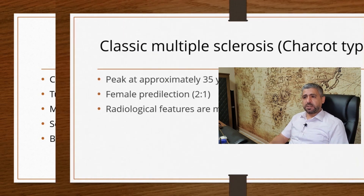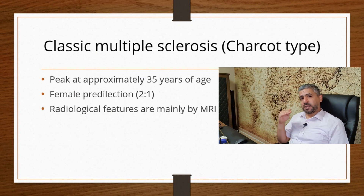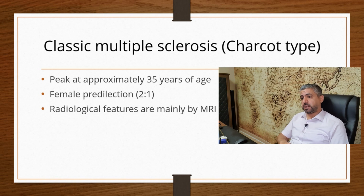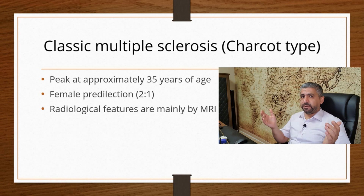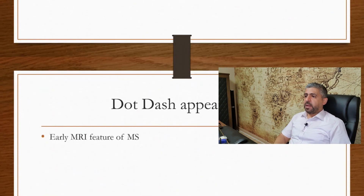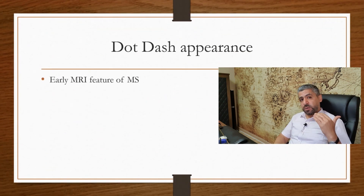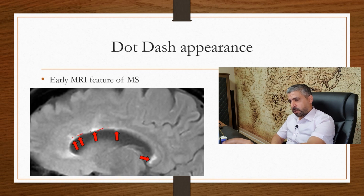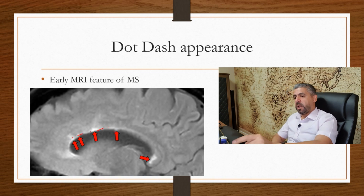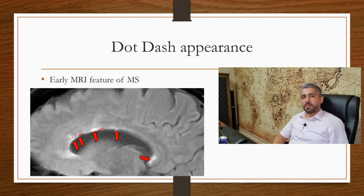The classic multiple sclerosis, or Charcot type, has a peak occurrence at around 35 years of age with obvious female predominance — about 2 to 1, female to male ratio. The radiological features are detected almost exclusively by MRI; we rarely see anything on any other modality. The earliest sign we see is what's called the dot-dash appearance. It's the early feature of MS — you see this dot-dash pattern in the subcallosal, subependymal surface.